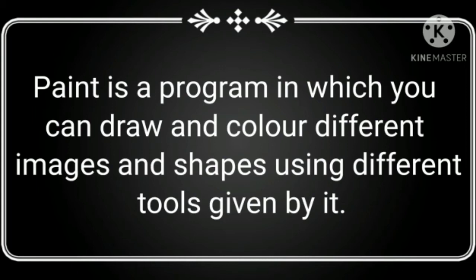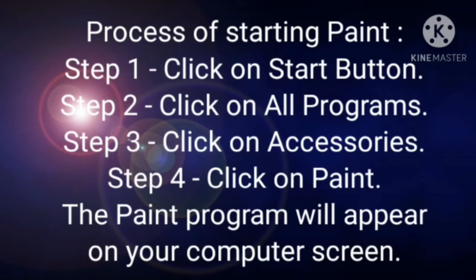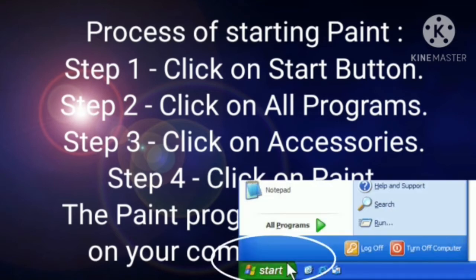Now we start — our next heading is: Process of Starting Paint. How do we start Paint on the computer? In the next line write Step 1: Click on Start button. On your computer, look at the bottom — you will find the Start button option on the side. You have to click there.